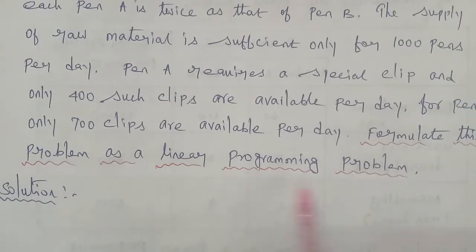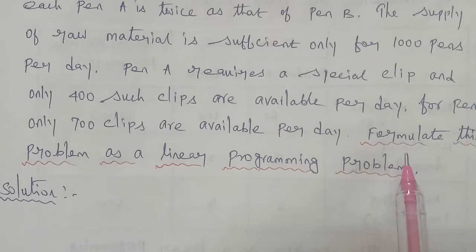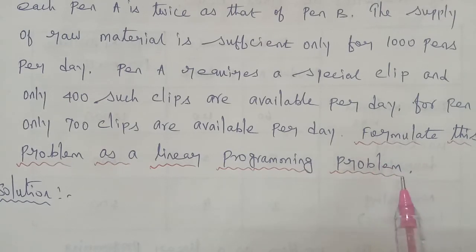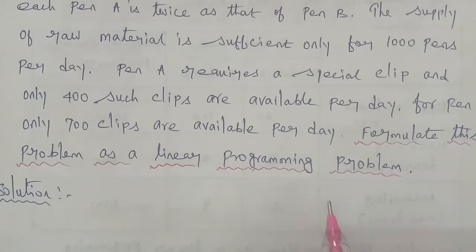In the linear programming problem, there are 4 steps, and the 4 steps are: first step, variables; next, objective function; number 3, constraints; and number 4, non-negative restriction.